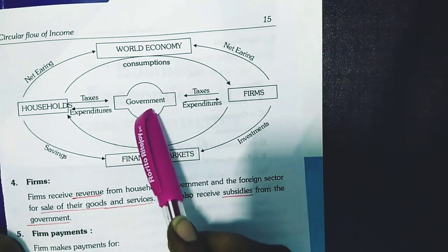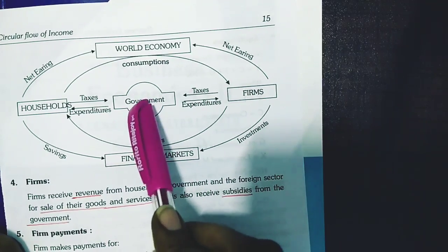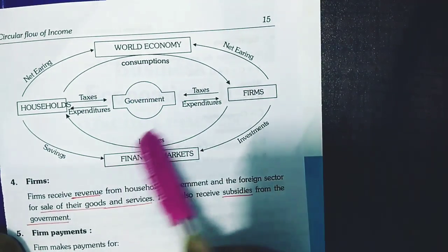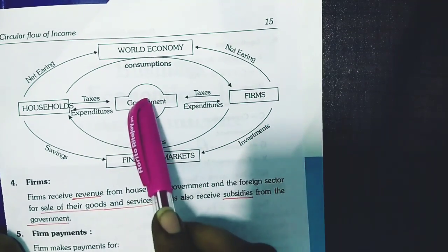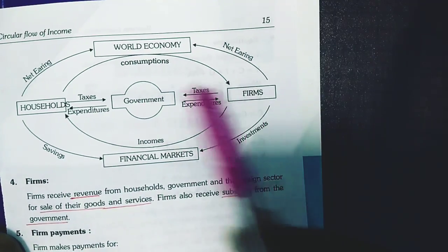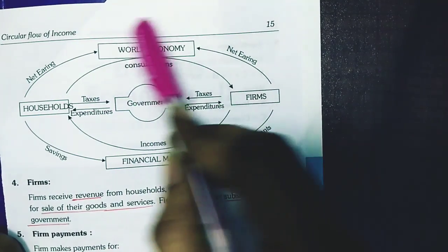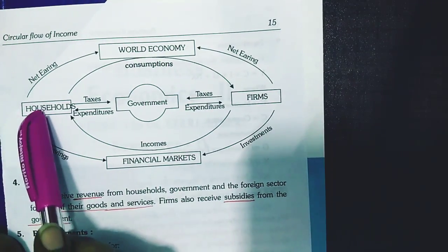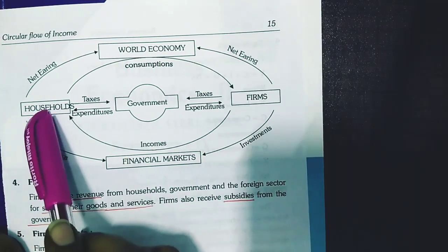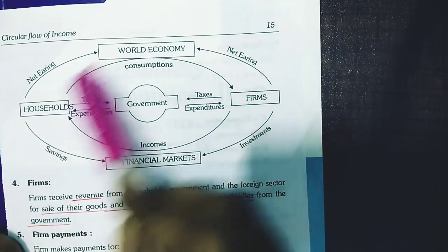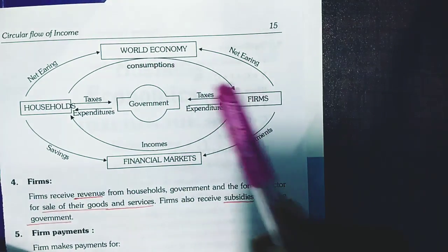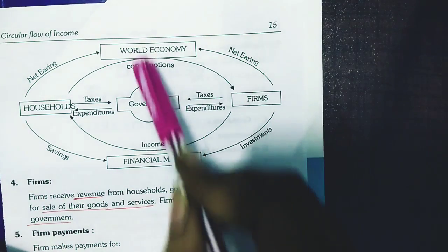The government receives revenue from firms, households, and the foreign sector, and spends on households and subsidies for firms. The foreign sector gets revenue from households, governments, and firms. In return, it makes payments to households — individuals working for the foreign sector receive salaries — as well as payments to firms and the government.